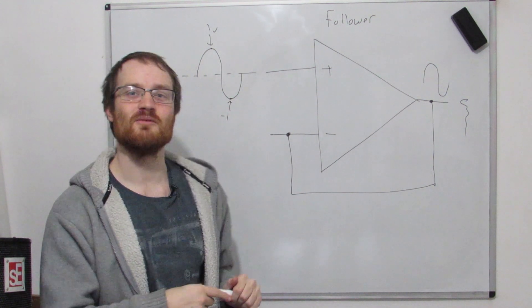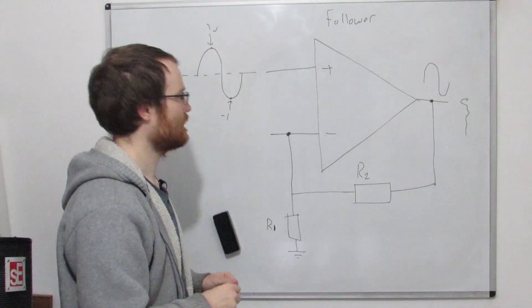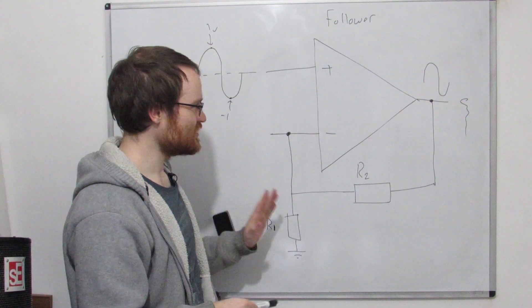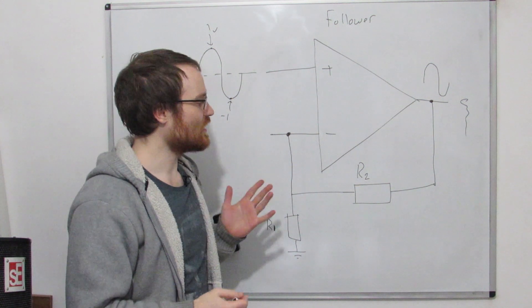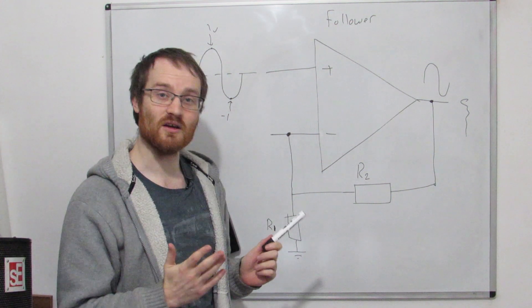Well, let's have a look what happens when we put some stuff in this feedback path. Okay, so by putting two resistors in the feedback circuit, I think you can probably imagine that I've changed how this circuit is going to work quite a lot.